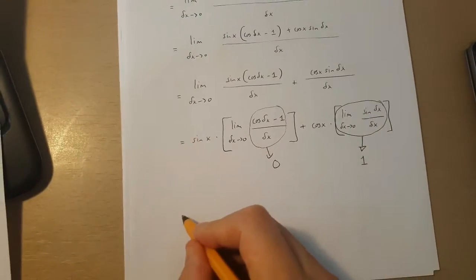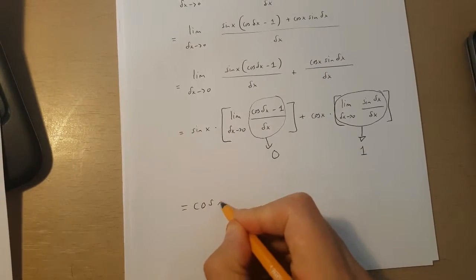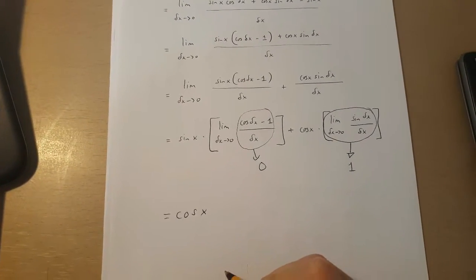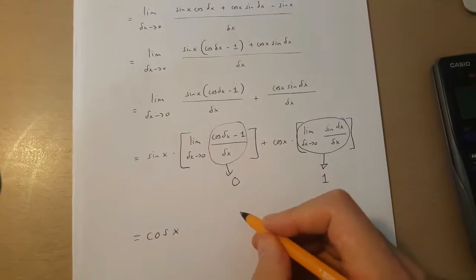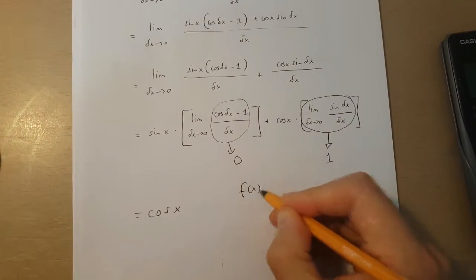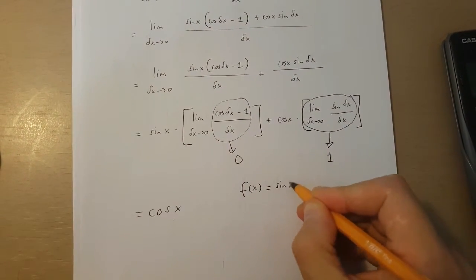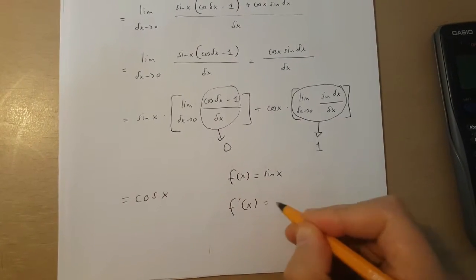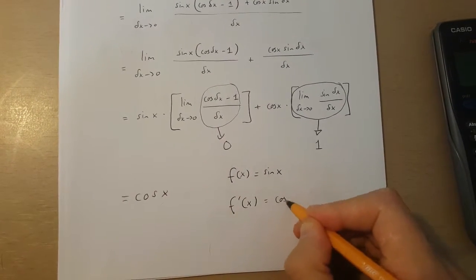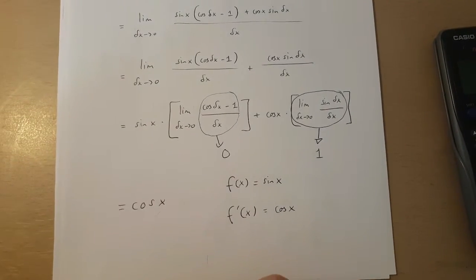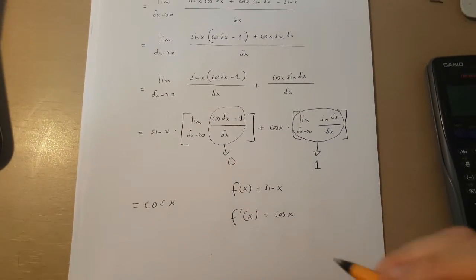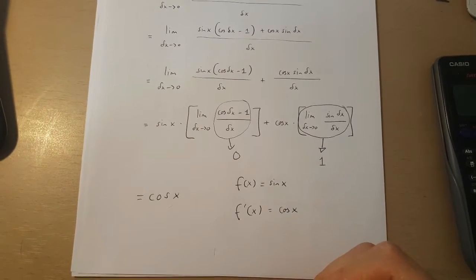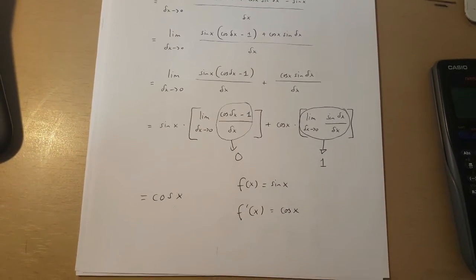So what we get is cos x. Which means that if the function of x is sin x, then its derivative is cos x. If you have any questions related to this video, please leave your comments below. Thanks for watching.